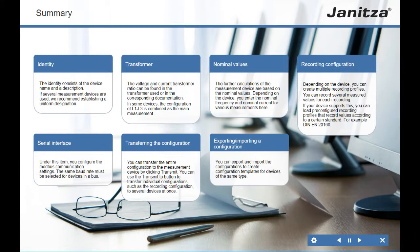Recording Configuration: Depending on the device, you can create multiple recording profiles and record several measured values for each recording. If your device supports it, you can load pre-configured recording profiles that record values according to a certain standard — for example, DIN EN 20160. Serial Interface: Under this item you configure the Modbus communication settings; the same baud rate must be selected for all devices in a bus. Transferring the Configuration: You can transfer the entire configuration to the measurement device by clicking Transmit, or use Transmit To to transfer individual configurations — such as the recording configuration — to several devices at once.